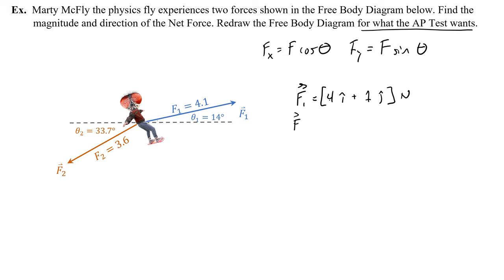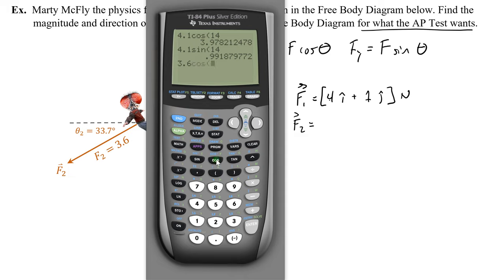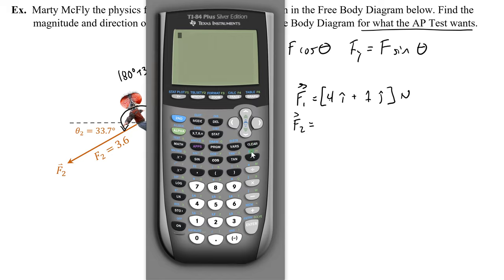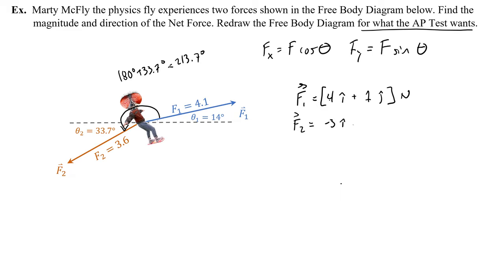For F2, I can't just use 33.7 degrees because I have to use the unit circle angle — that's actually 180 plus 33.7, which is 213.7 degrees. So 3.6 cosine of 213.7 degrees gives about negative 3, and 3.6 sine of 213.7 gives about negative 2. So F2 is negative 3i minus 2j.